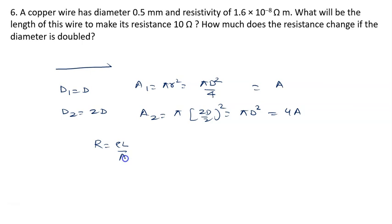R equal to rho L upon A. Rho is constant, L is constant, it means R depends on the area of cross section, or you can say R is proportional to 1 upon A. If area becomes 4 times, then from this equation resistance will become 1 by 4 times.